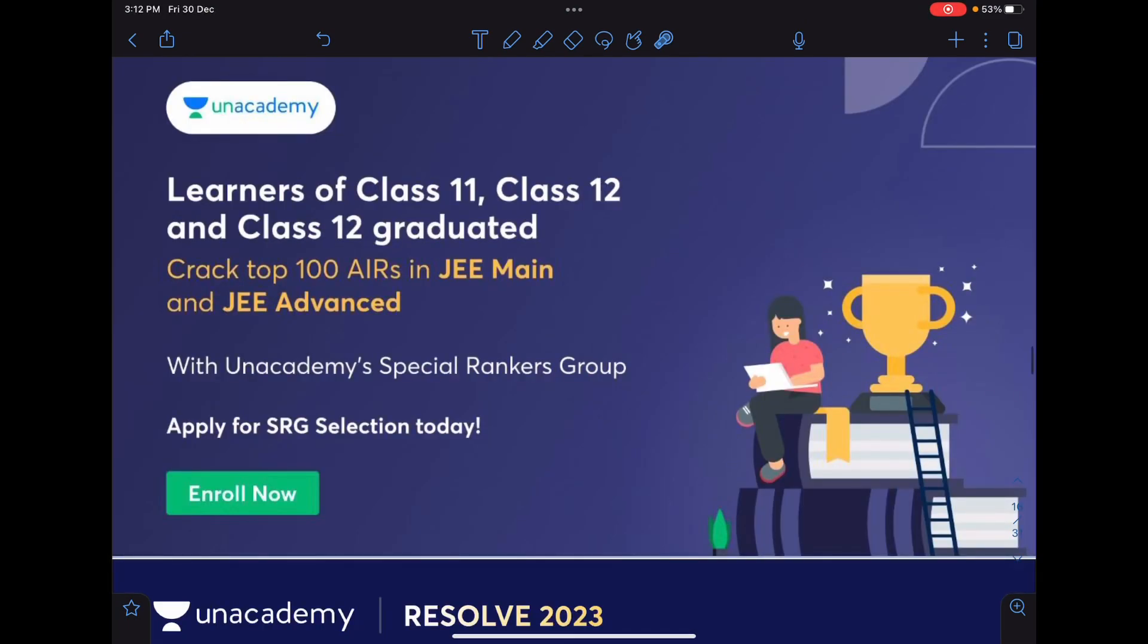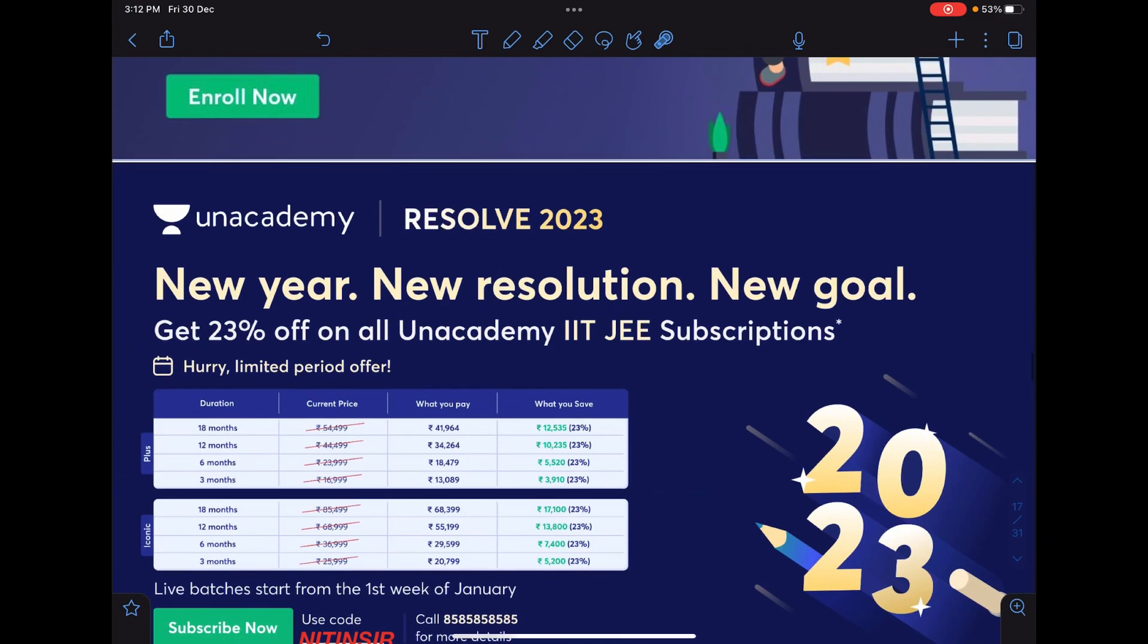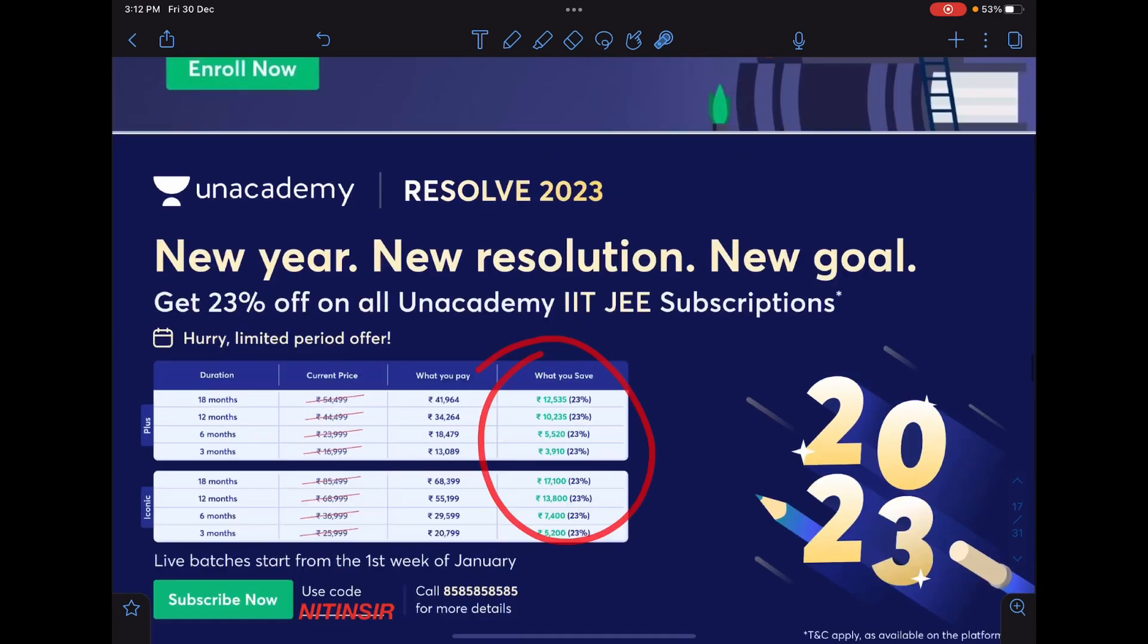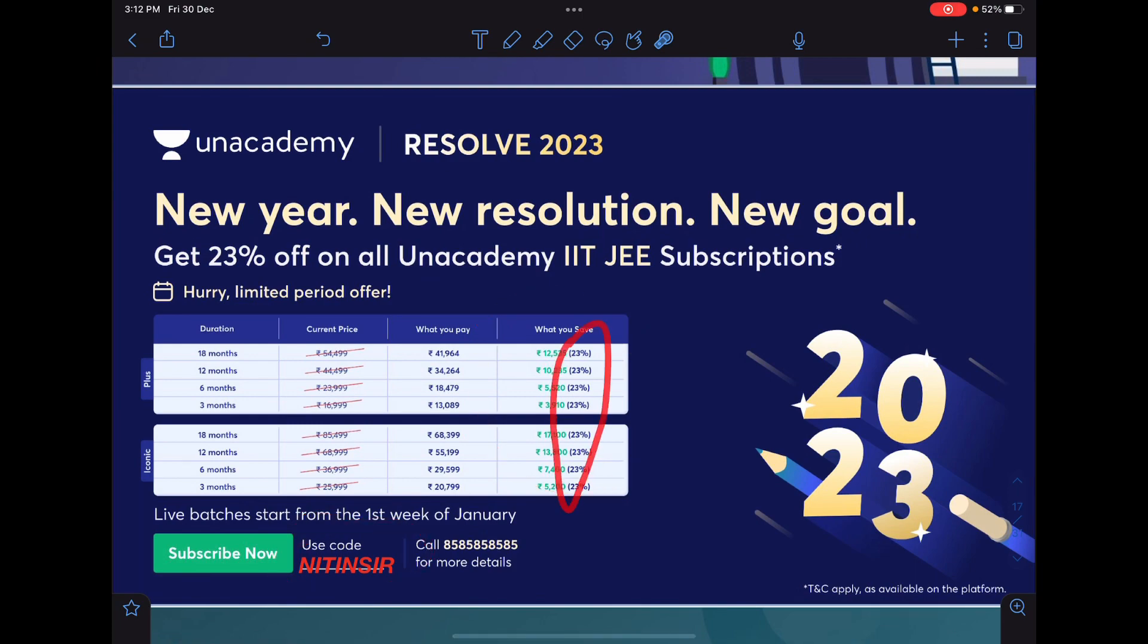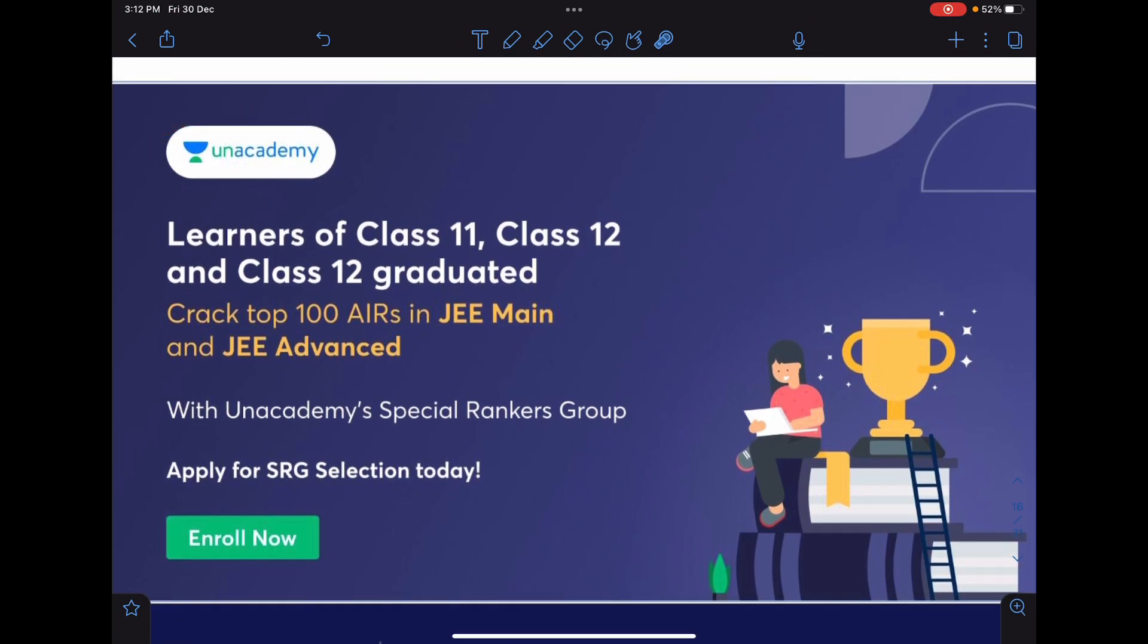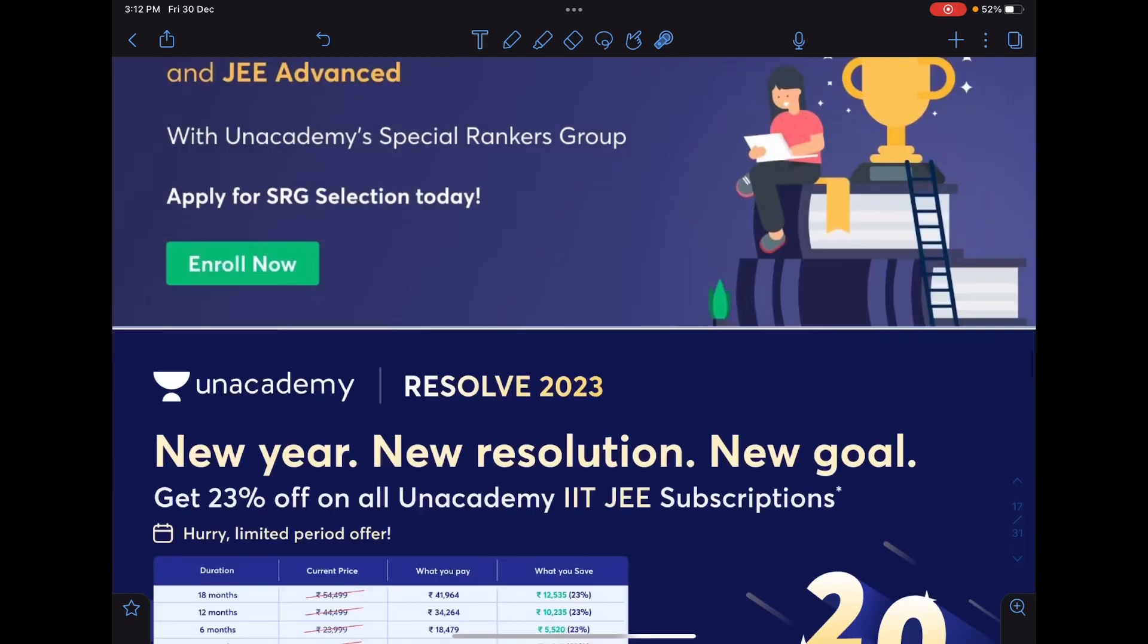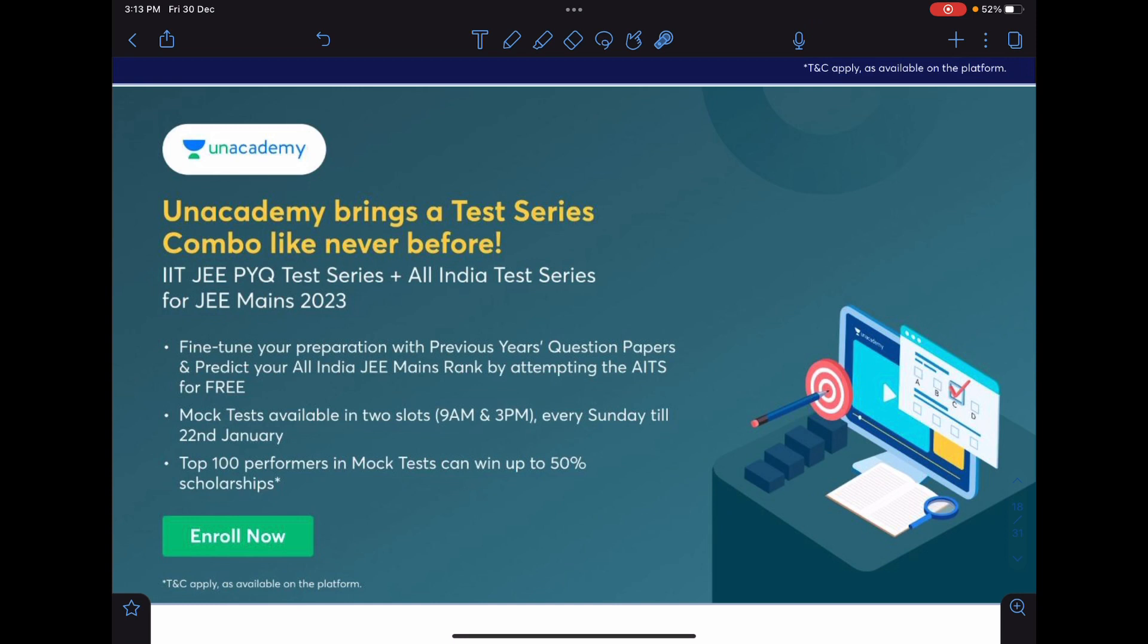So guys, if you want to connect with me on Unacademy, there are some discounts going on. You can use my code Nitin Sir for new enrollment. And other than that, if you want to go for a rank improvement program under the special rankers group, you can definitely go through some very nice problems and nearly all teachers of Unacademy will be taking care of this. And another one is Unacademy's test series. This is combo like PYQ test series and All India Test Series for JEE Mains and Advanced. So you can enroll in this. Thank you.